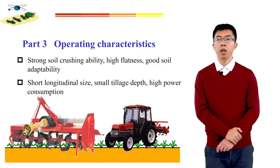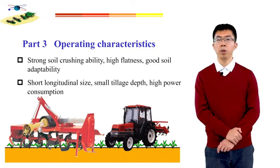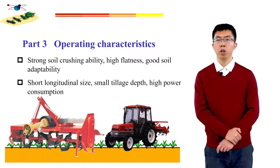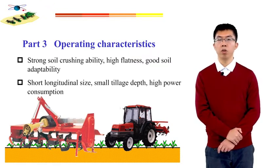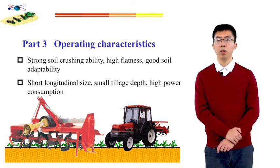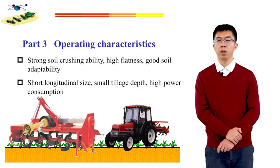Rotary tillers are characterized by strong soil crushing ability, high flatness, good soil adaptability, short longitudinal size, and small tillage depth. The disadvantages include high power consumption, small working width, and low efficiency.